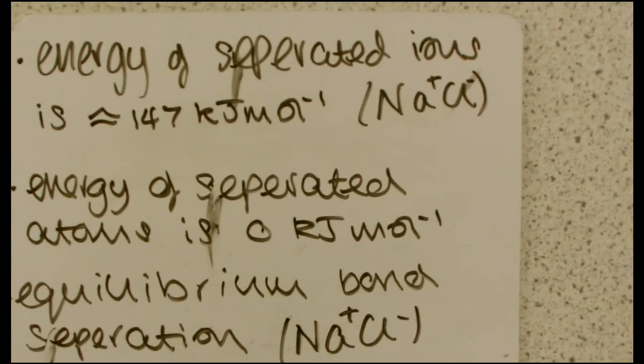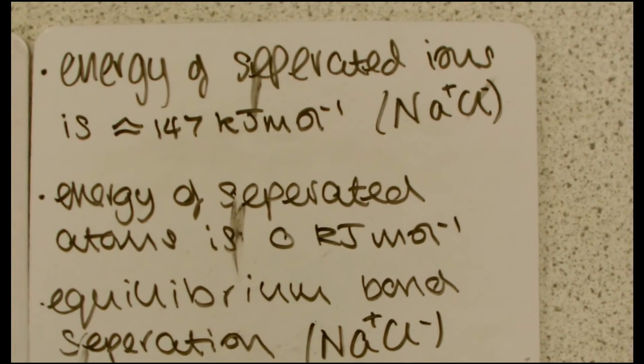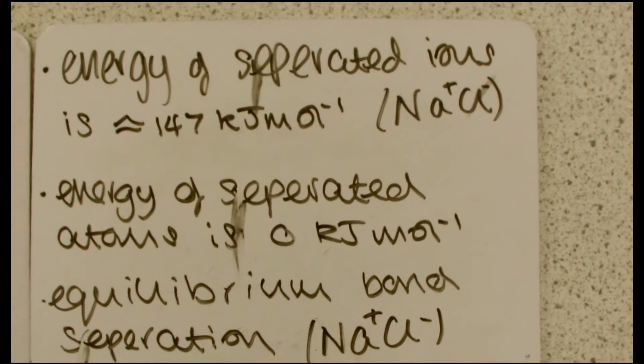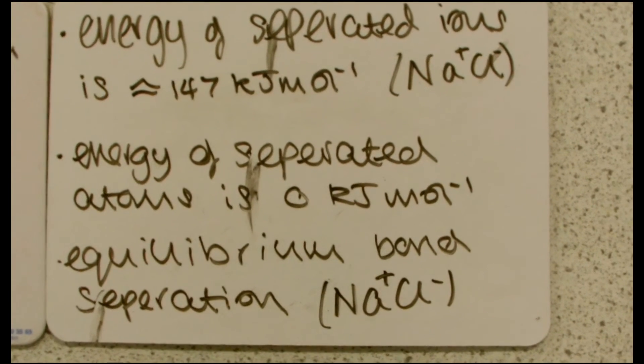And just to sum up, for the NaCl, the energy of the separated ions is going to be a little bit over zero. The energy of the separated atoms is going to be zero on our scale. So that would be the equilibrium bond separation for NaCl.